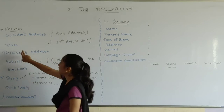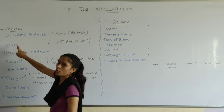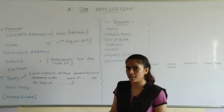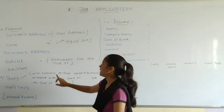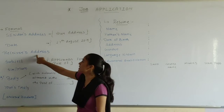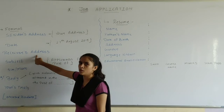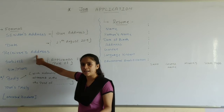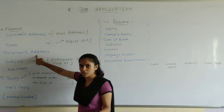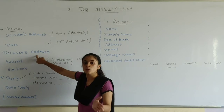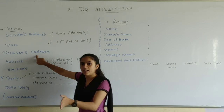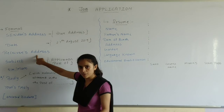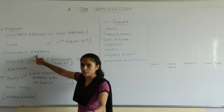After that, the date — on which date you are writing the application. Next, the receiver's address — to whom you are writing this application, meaning the person who has given the advertisement in the newspaper, their address.